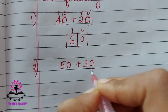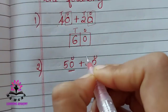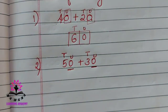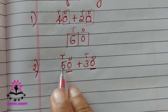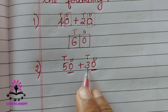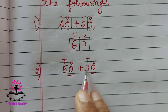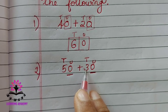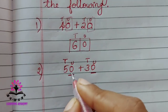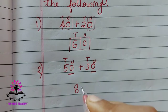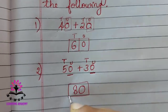Let us consider 50 plus 30. There is zero in the unit place here and also here. In the tens place there is five and three. Five plus three is eight. Write zero in the unit place — so 80 is the answer.